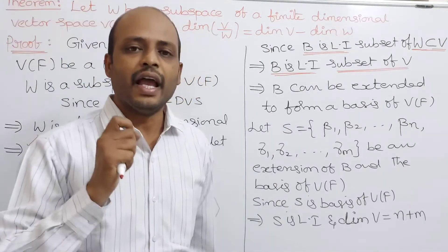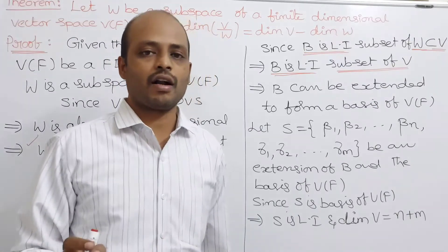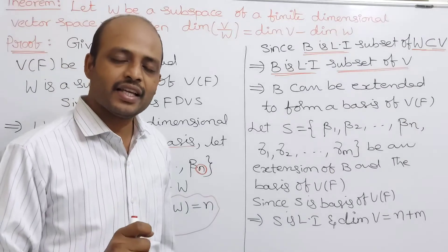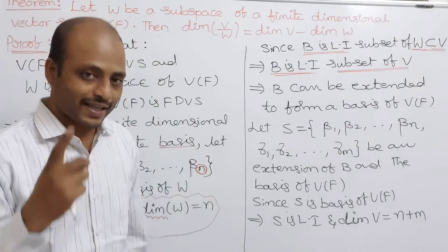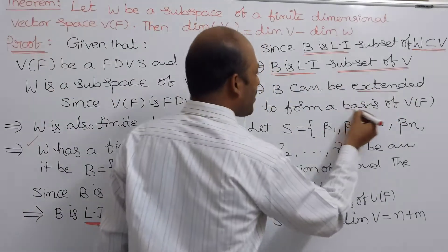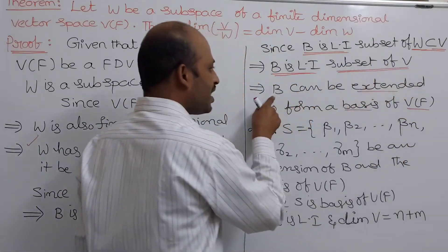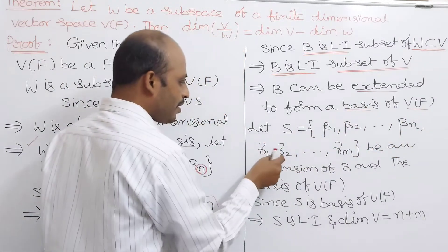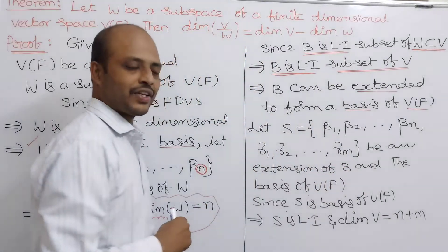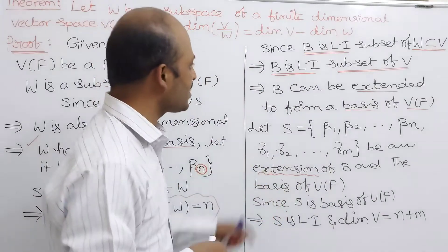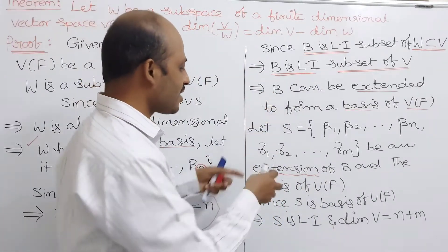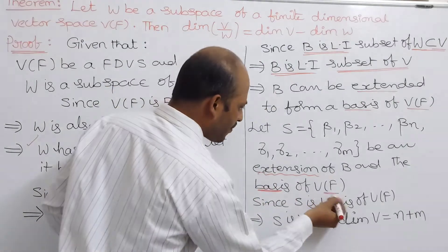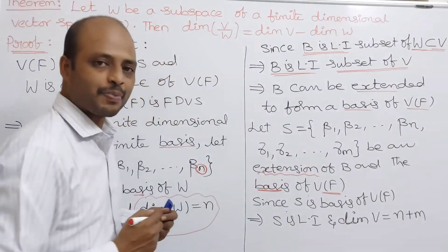Capital B is a linearly independent subset of W, which is a subset of V. Therefore capital B is a linearly independent subset of V. Every linearly independent set is itself a basis or it can be extended to form a basis. We use the extension: B can be extended to form a basis of V over F. Let capital S = {β₁, β₂, ..., βₙ, γ₁, γ₂, ..., γₘ} be an extension of B, where we add elements γ₁, γ₂, ..., γₘ not already in B. Capital S is a basis of V over F.